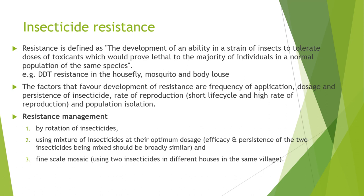There may be a question on insecticide resistance, which is defined as the development of an ability in a strain of insects to tolerate doses of toxicants which would prove lethal to the majority of individuals in a normal population of the same species — for example, DDT resistance in houseflies, mosquitoes, and body lice. The various factors that favor development of resistance are: frequency of application, dosage and persistence of the insecticide, rate of reproduction of the arthropods, and population isolation.